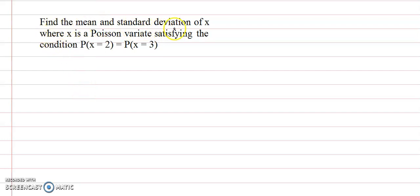Find the mean and standard deviation of x where x is a Poisson variate satisfying the condition P(x = 2) = P(x = 3). Suppose m is the parameter. Let m be the parameter of the Poisson distribution.